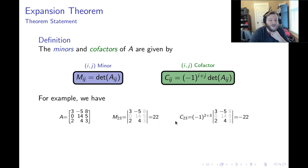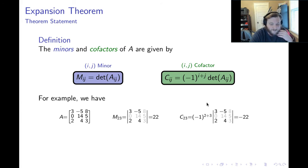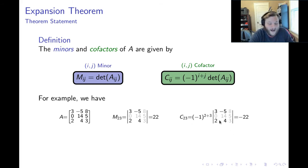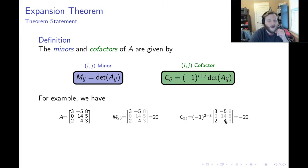What about the 2,3 cofactor? For the 2,3 cofactor, I need the scalar negative 1 to the 2 plus 3. That's equal to negative 1 to the 5, which is negative 1. And then I multiply by the determinant of the 2,3 submatrix, which here is 22. So the 2,3 cofactor is negative 22.